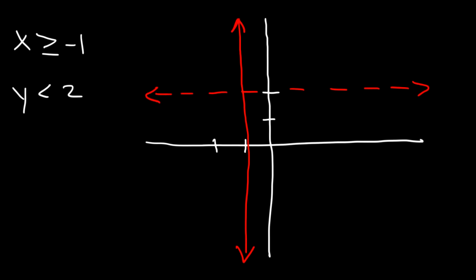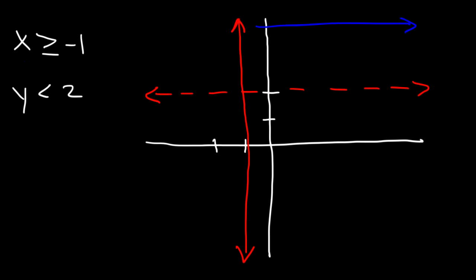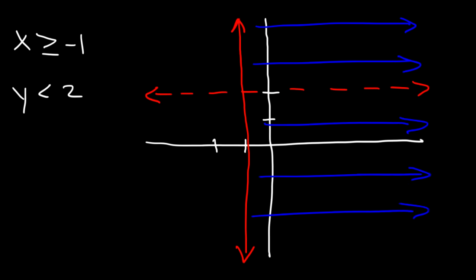Now, let's focus on x is equal to or greater than negative 1. When x is greater than a number, it's to the right of that number. So, we're going to have to shade to the right of the vertical line. Now, let's focus on y. y is less than 2, so we have to shade below the horizontal line.